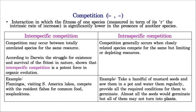Competition is of two types: the first one is inter-specific competition and the next one is intra-specific competition. Inter-specific competition means two organisms of two different species participate — that is called inter-specific competition. Whereas intra-specific competition means two organisms belonging to the same species compete with each other — that is called intra-specific competition.